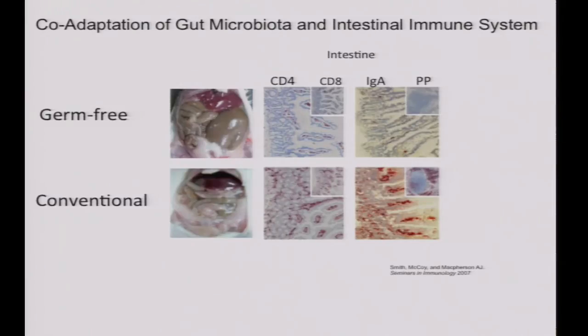More funding for notobiotic systems across many different model systems and for repositories is needed. There is also a gap in maximal information extraction from germ-free and notobiotic systems. Even from germ-free mice we've had for maybe 60-plus years, there's a lot we can learn. Opening one of these animals post-mortem, we can see clear differences between a germ-free animal and a conventional animal, and many of those differences outside the gut haven't been adequately explored.